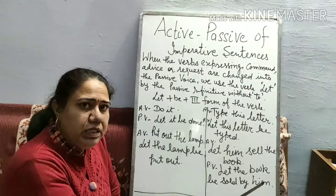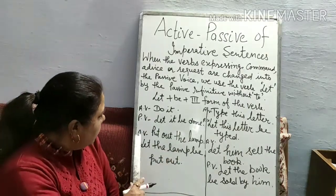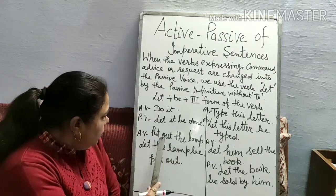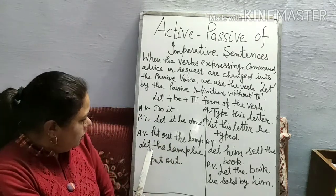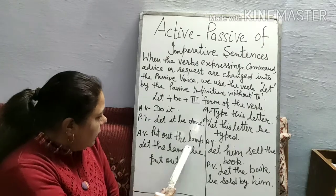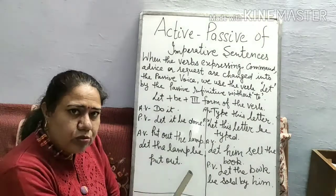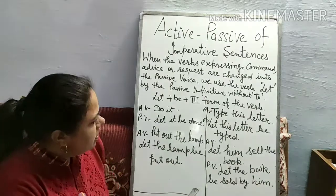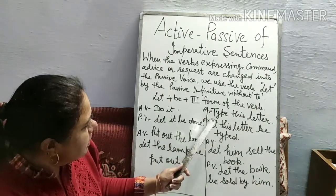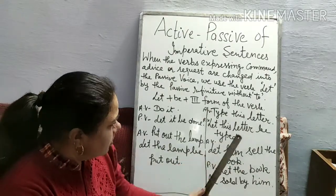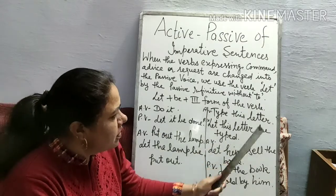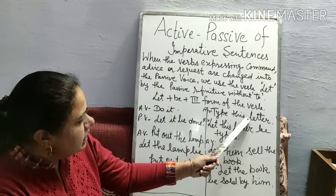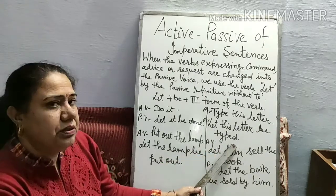Active voice: 'Put out the lamp.' The passive voice will be: 'Let the lamp be put out.' Next example — active voice: 'Type this letter.' The passive voice will be: 'Let this letter be typed.' These passive voice transformations are very straightforward.